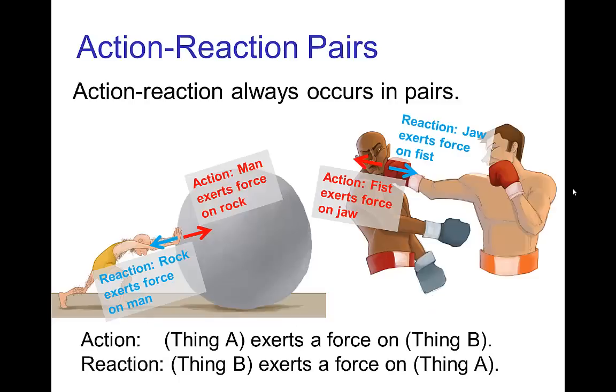Now, action-reaction always occurs in pairs. So whenever we talk about some force being exerted by one object on another, call thing A exerts a force on thing B, we always have a reaction which is thing B exerts a force on thing A.